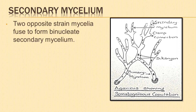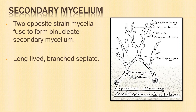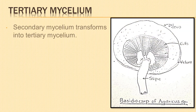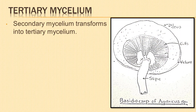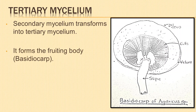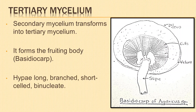As a result of hyphal fusion of compatible strains, the primary mycelium becomes binucleate and is known as secondary mycelium or dikaryotic mycelium. It is long-lived, perennial, branched, septate, and forms the major part of the life cycle. The secondary mycelium grows extensively under the soil and transforms into a complex tissue of tertiary mycelium.